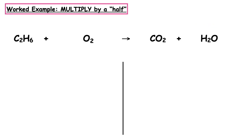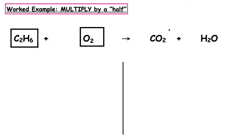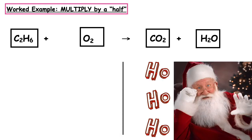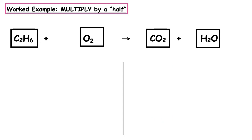This first worked example requires multiplying by a half. We have ethane, formula C₂H₆, reacting with oxygen to produce carbon dioxide and water. The first step is to put boxes around each of the entities, then write our shopping list. Remember ho ho ho — all other elements then hydrogen and oxygen last — so we have carbon (C), hydrogen (H), and oxygen (O), mirrored on both sides.